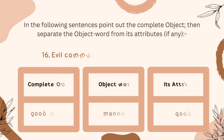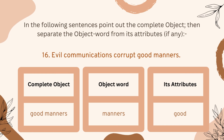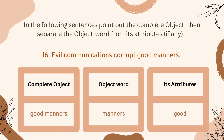Number sixteen, the last one: 'Evil communications corrupt good manners.' 'Good manners' is the complete object. 'Manners' is the object word, and 'good' is the attribute of this word. Thanks for watching.